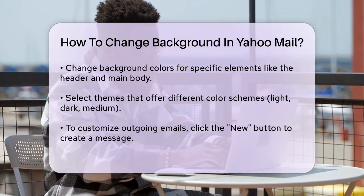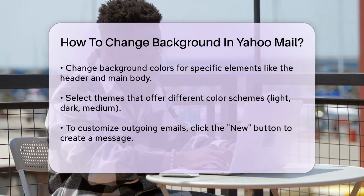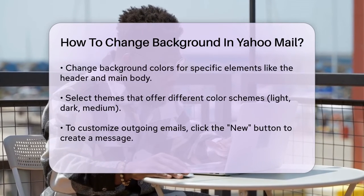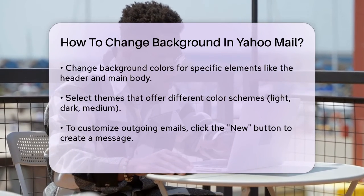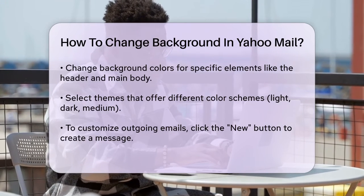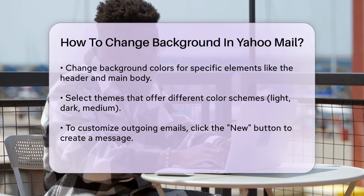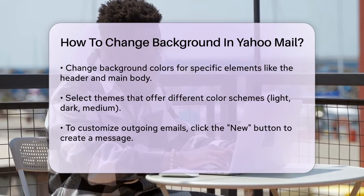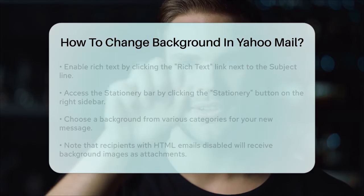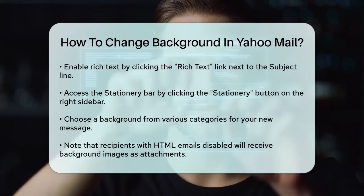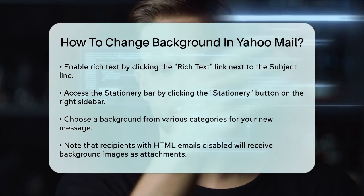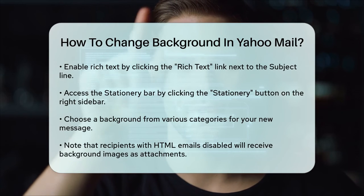Another way to add some personality to your emails is by adding a background to your outgoing messages. To do this, click the New button to open the new message form. Then, click the Rich Text link next to the subject line to enable rich text for the message. Next, click the Stationary button to open the stationary bar in the right sidebar. Here, you can select from various categories of backgrounds and choose the one you like. Once you've selected a background, it will be applied to your new message.